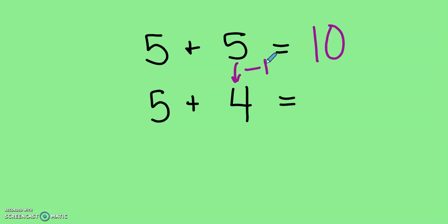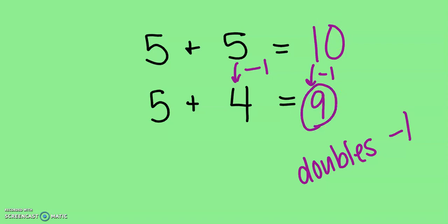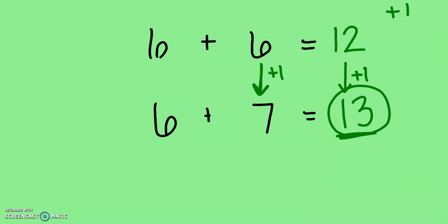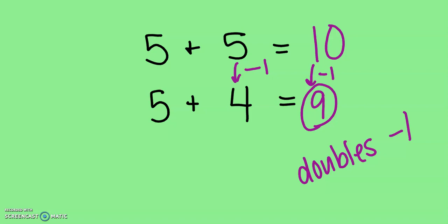I subtracted one. You can also use this strategy. It's called doubles minus one. That means that we went down from our double. So if I subtracted one over here, that means I need to go down one in my answer. Let's see, if I put my ten fingers up and I take one away, how many do I have left? I have nine. So in our strategy, we can either add one and go up or we can subtract one and go down. These are great doubles strategies.